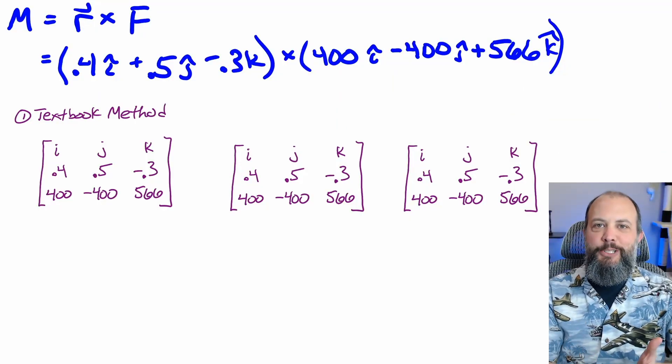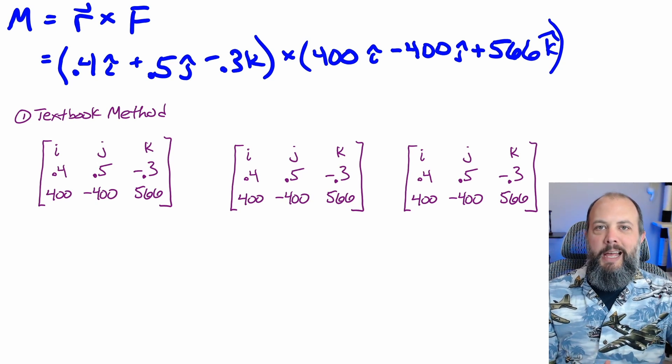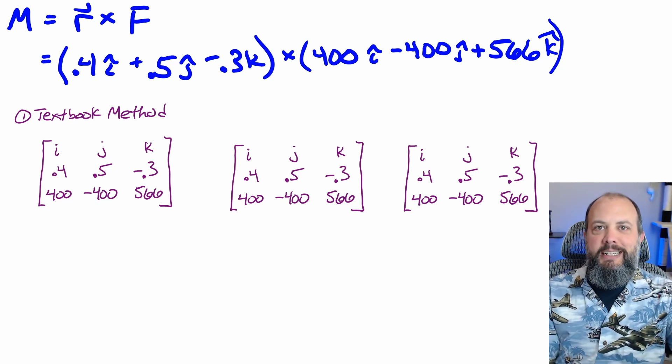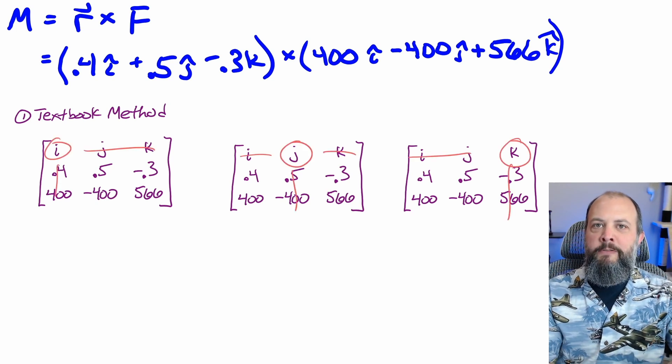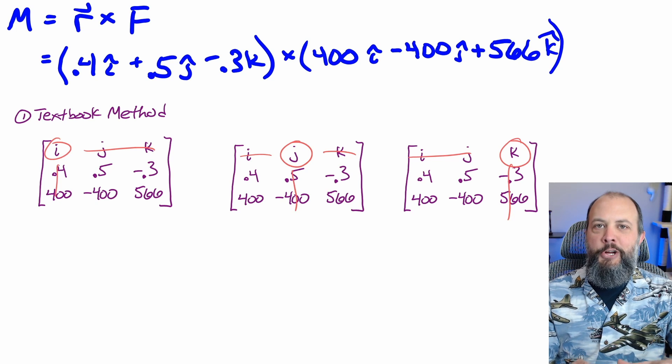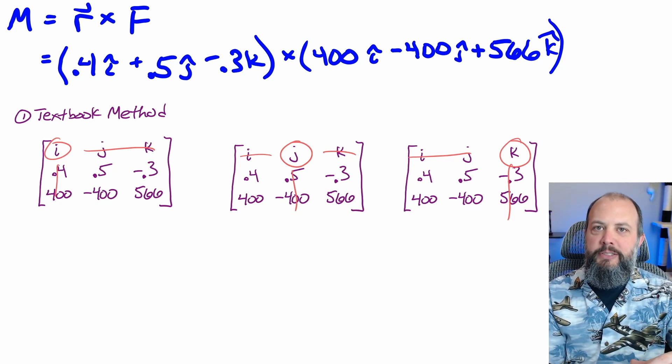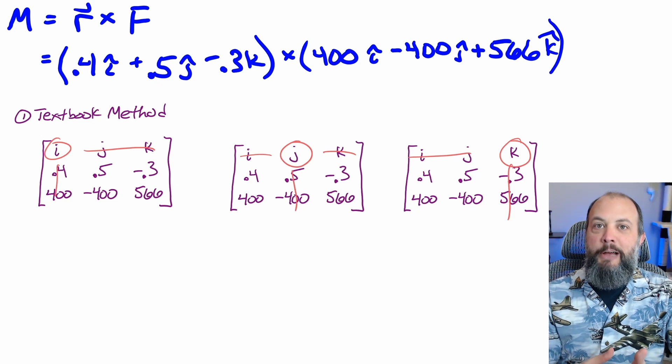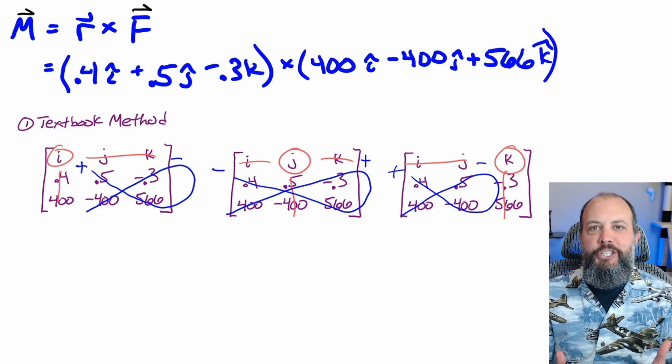I'll call the first method the textbook method because it's what you probably learned in a math class a long time ago, and it's probably also listed in your statics textbook. This method is split into three steps, one for i, one for j, one for k, and you convert your three by three matrix into a smaller two by two matrix for each of those three directions. Then just calculate the determinant of each of those remaining two by two matrices.